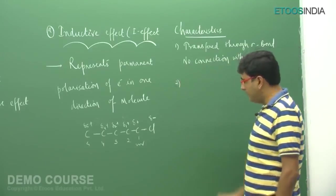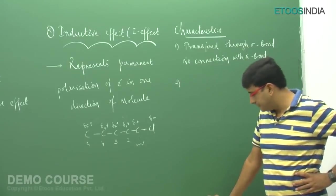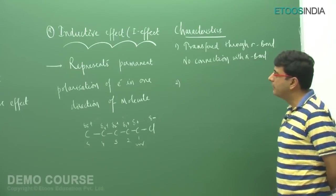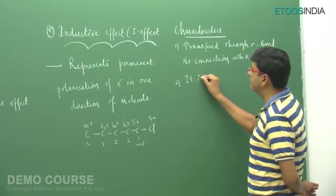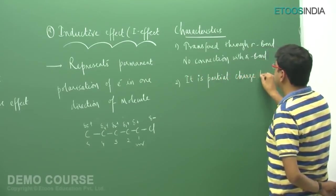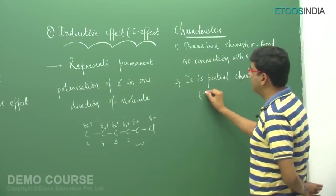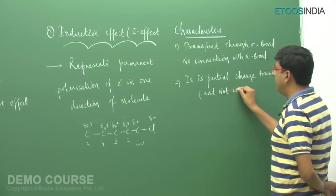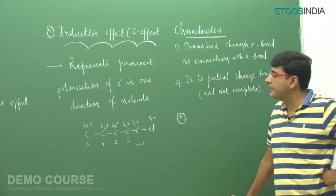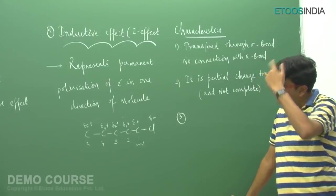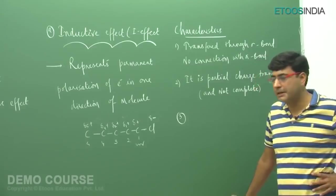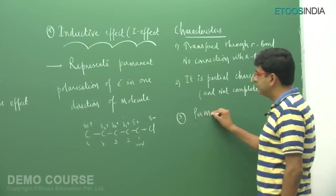Another important point: it is not a complete charge transfer. The first atom develops the maximum positive charge, and as the distance increases, the magnitude of the positive charge decreases. So it is a partial charge transfer, not a complete charge transfer. Furthermore, because the chlorine atom is permanently attached to the molecule, this is a permanent effect — it remains in the molecule irrespective of the presence of any other external particles.